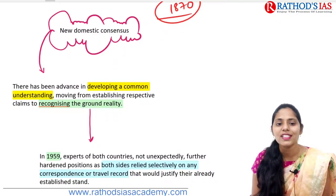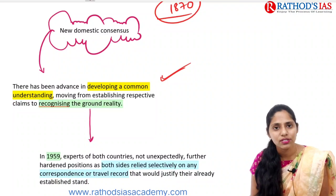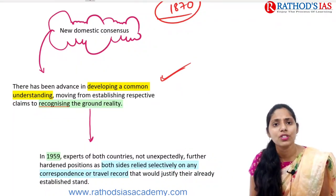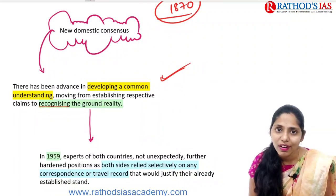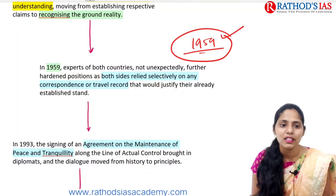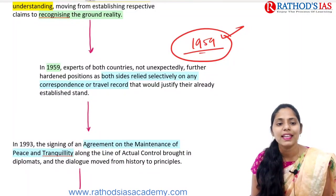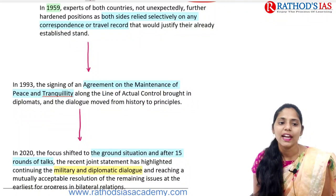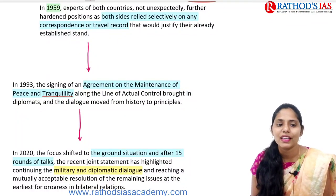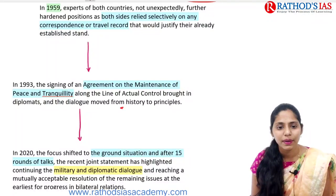Regarding new domestic consensus, there has been advancement in developing common understanding, moving from establishing respective claims to recognizing ground reality. Because of all these historical developments since the 1600s, we are now focusing on common understanding and proper relations. After independence, in 1959, experts from both India and China hardened their positions and came with correspondence regarding travel records. In 1993, an agreement was reached on the maintenance of peace and tranquility along the Line of Actual Control, bringing diplomats and dialogue from history to principles.